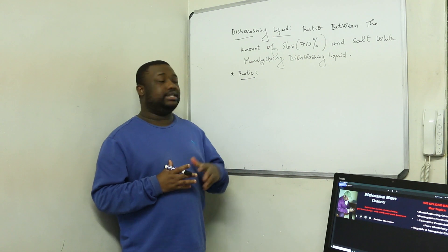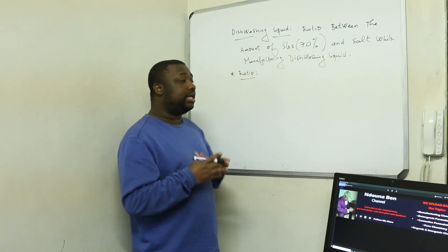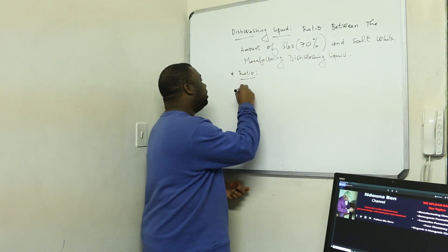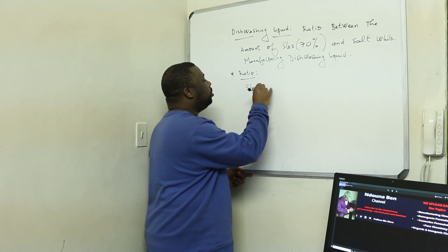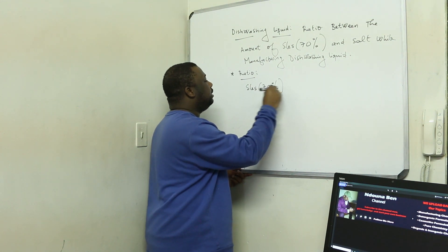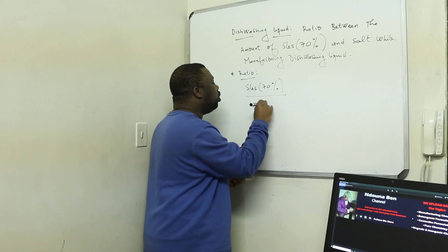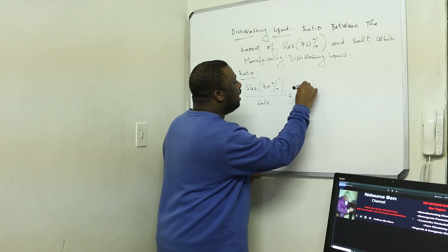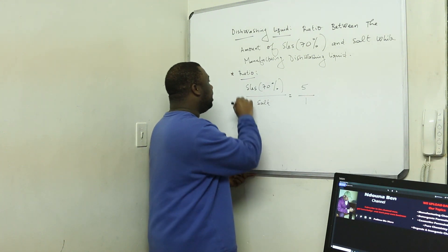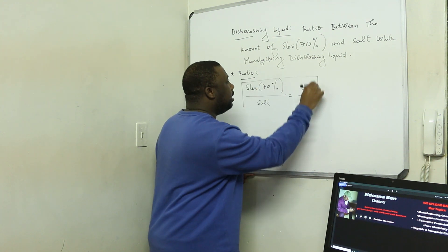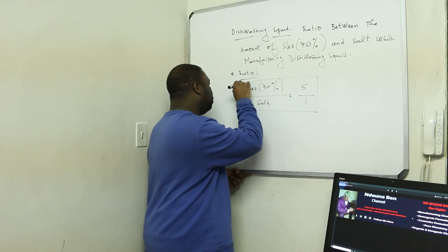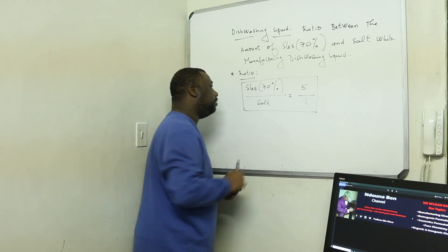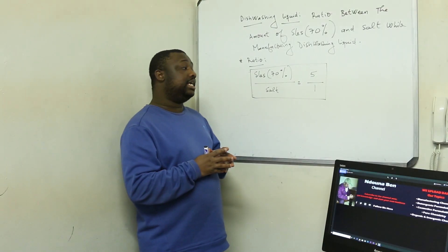Here we go with the ratio. The ratio is simply that the amount of SLES—we're talking 70% SLES—over the amount of salt is equal to 5 over 1, or 5 to 1. Very important ratio. Let us frame this. What is the meaning of this?